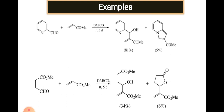Some examples: first, an aldehyde or ketone acts as electrophile with a conjugated substrate and DABCO catalyst. Without DABCO, no reaction takes place. In the second example, a bifunctional reactant with aldehyde and ester is used — always remember that aldehydes and ketones are more electrophilic, so always use aldehydes. In this case, 34% product is obtained and the reaction proceeds with the aldehyde, not the ester. In some cases, if PPh3 is used instead of DABCO, the reaction is called the Morita reaction. If both DABCO and PPh3 are used, it is called the Morita-Baylis-Hillman reaction.